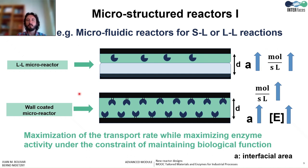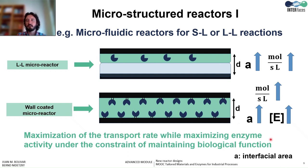In the second example, we have a wall-coated microreactor. In this case, the enzyme is immobilized on the internal walls of the tubular reactor. The miniaturization of the diameter is going to have a double effect. On one hand, it is going to increase the specific area so we can have a high concentration of enzyme in the reactor, associated with a high potential volumetric activity. But also, when we are decreasing the diameter, we are decreasing the diffusion distances, so we are enhancing the transfer rate. So in this configuration, the goal of this reactor design will be to maximize the transfer rate while maximizing the enzyme activity, under the constraint of maintaining the biological function.